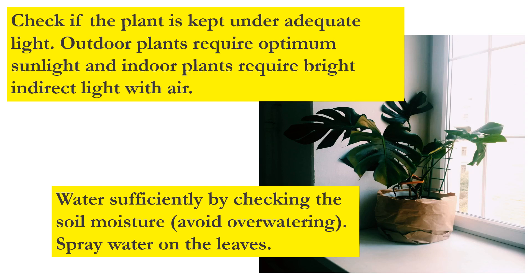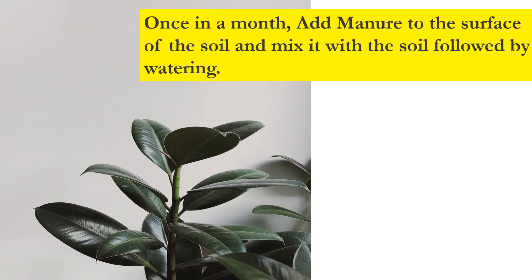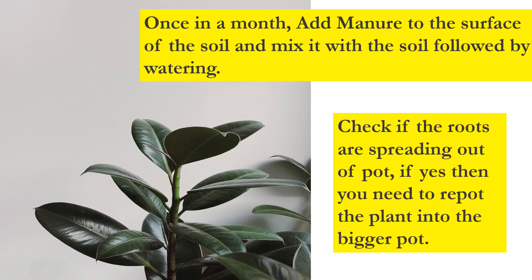Water sufficiently by checking the soil moisture — always avoid overwatering. Spray water on the leaves once every three or four days. Once a month, add manure to the surface of the soil, mix it in, and then water.